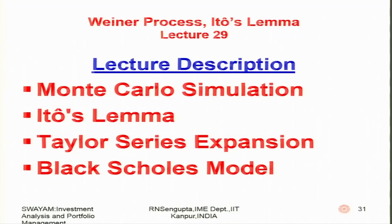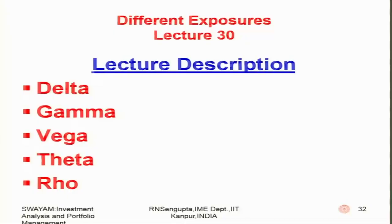Lecture 29, a continuation of the binomial process and Ito's lemma, will consider Monte Carlo simulation using simple problems, Ito's lemma, and how Taylor series expansion in a multi-dimensional case can be used to derive the Black-Scholes model. Finally, in lecture 30, we will consider different types of exposures: delta, gamma, vega, theta, rho, and what they mean for a portfolio.